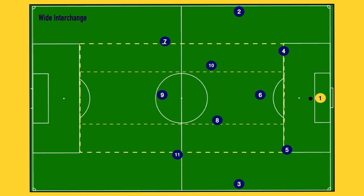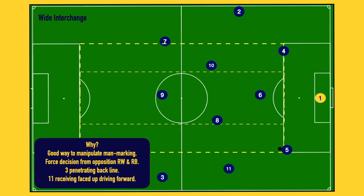The last one is a wide interchange. For me, an interchange is just between two players, whereas a rotation involves more than two players. The ball cycles out to the left center back, and as the left center back receives it, there's just a little interchange between the eleven and the three. It's a good way to manipulate man marking — our eleven is a really good player and really good on the ball, so we want her on the ball as much as possible. That's where this came from.